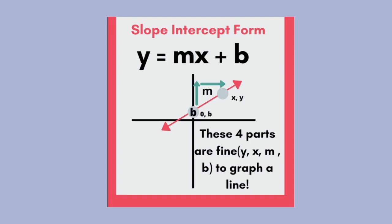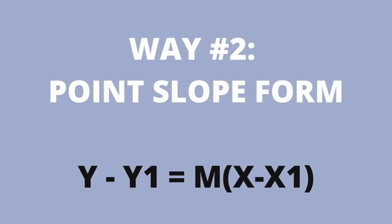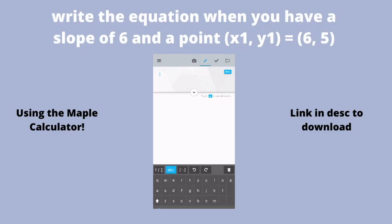Point-slope form: the equation y - y₁ = m(x - x₁).